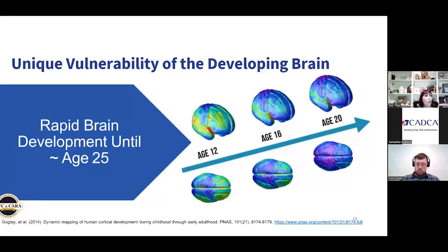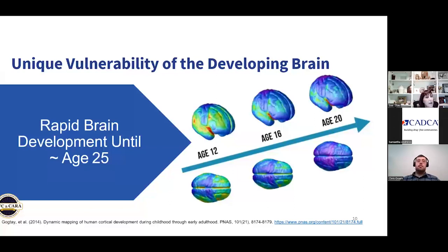We all know that the adolescent brain doesn't really stop developing until somewhere in your mid to late 20s, but elected officials don't necessarily understand that, and a lot of parents don't understand that either. This is something very important to educate people about. Mixing substances into the adolescent brain is contraindicated and problematical — it causes addiction and a host of other mental health and related issues. We really need to put off the age of initiation as long as we possibly can for all substances.